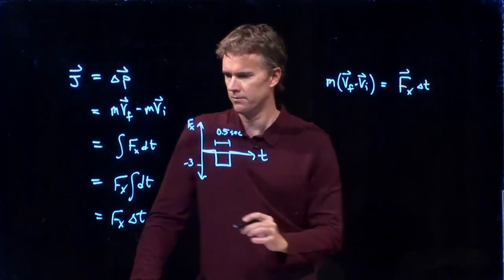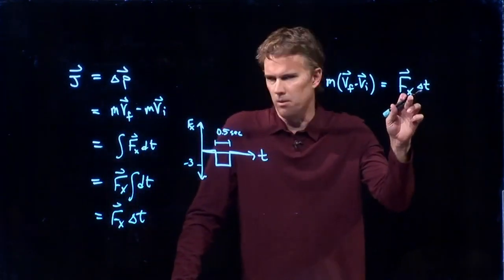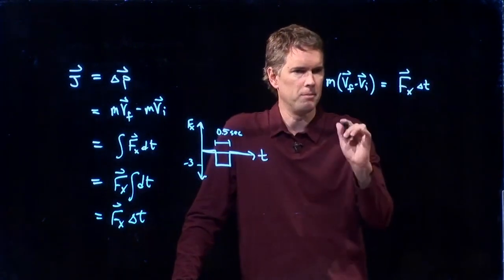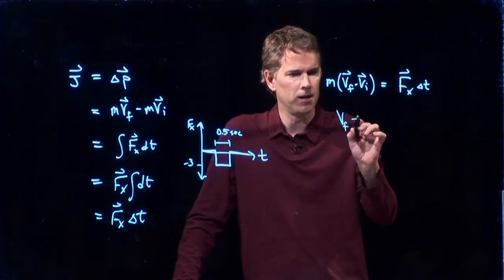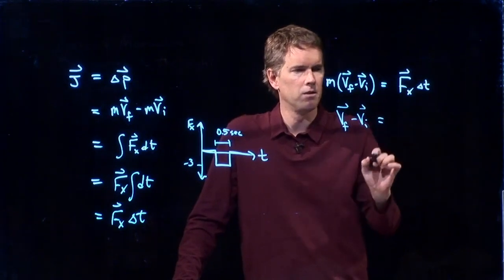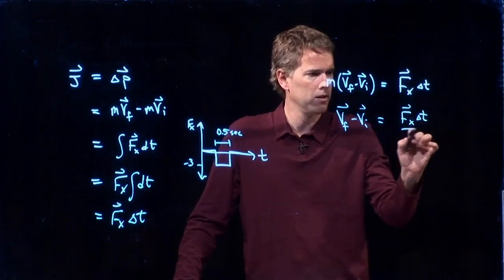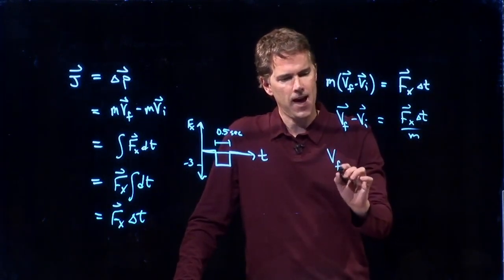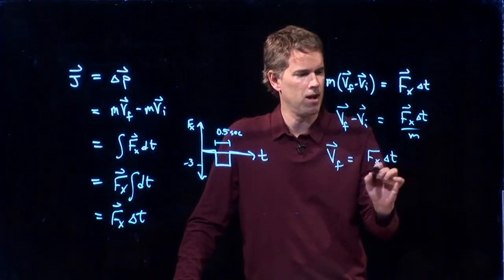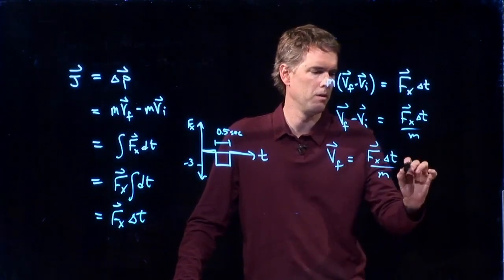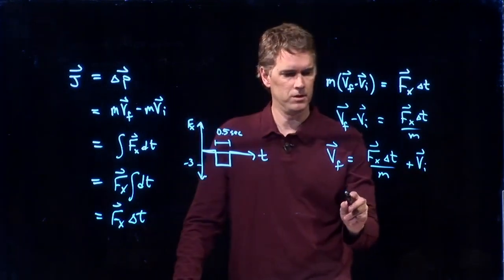This is a vector. We'll put a vector sign on that. If you write the component there, F sub X, you don't always have to put the vector on top of it. Let's solve this for VF. VF minus VI is equal to what? Well, I divide by the M. I get F sub X delta T divided by M. And now I just have to add VI to the other side. So we get VF equals F sub X delta T over M plus V sub I. And now we have all those numbers. Let's plug them in and see what we get.